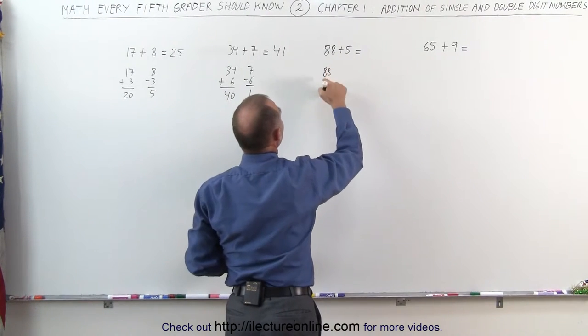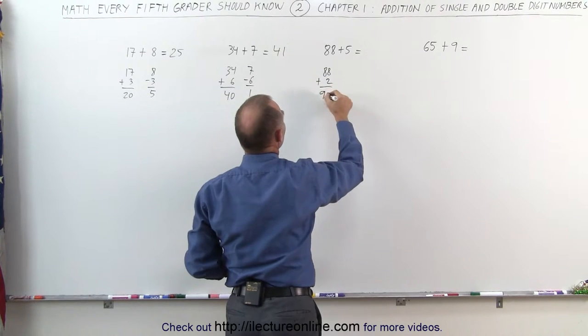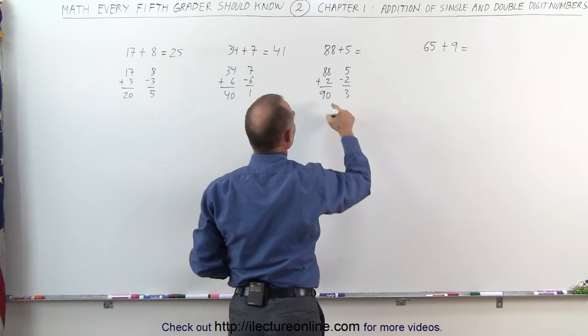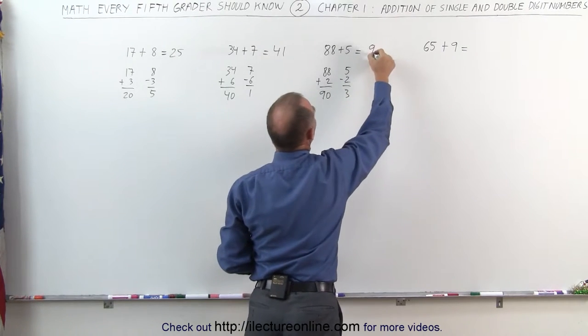So what I did was: 88 plus 2 gives me 90, subtract the 2 from 5 to get 3, and 90 plus 3 is 93.